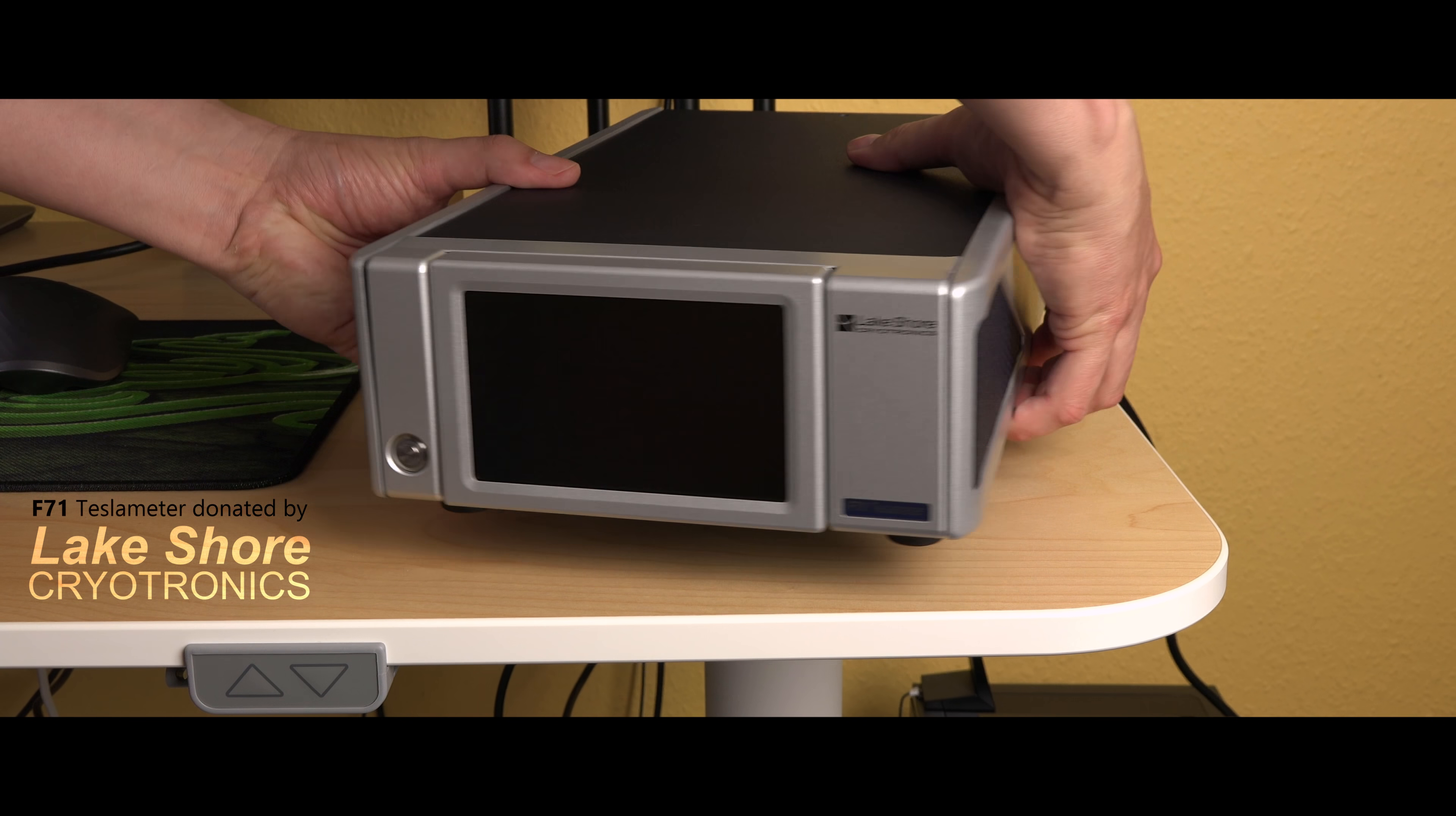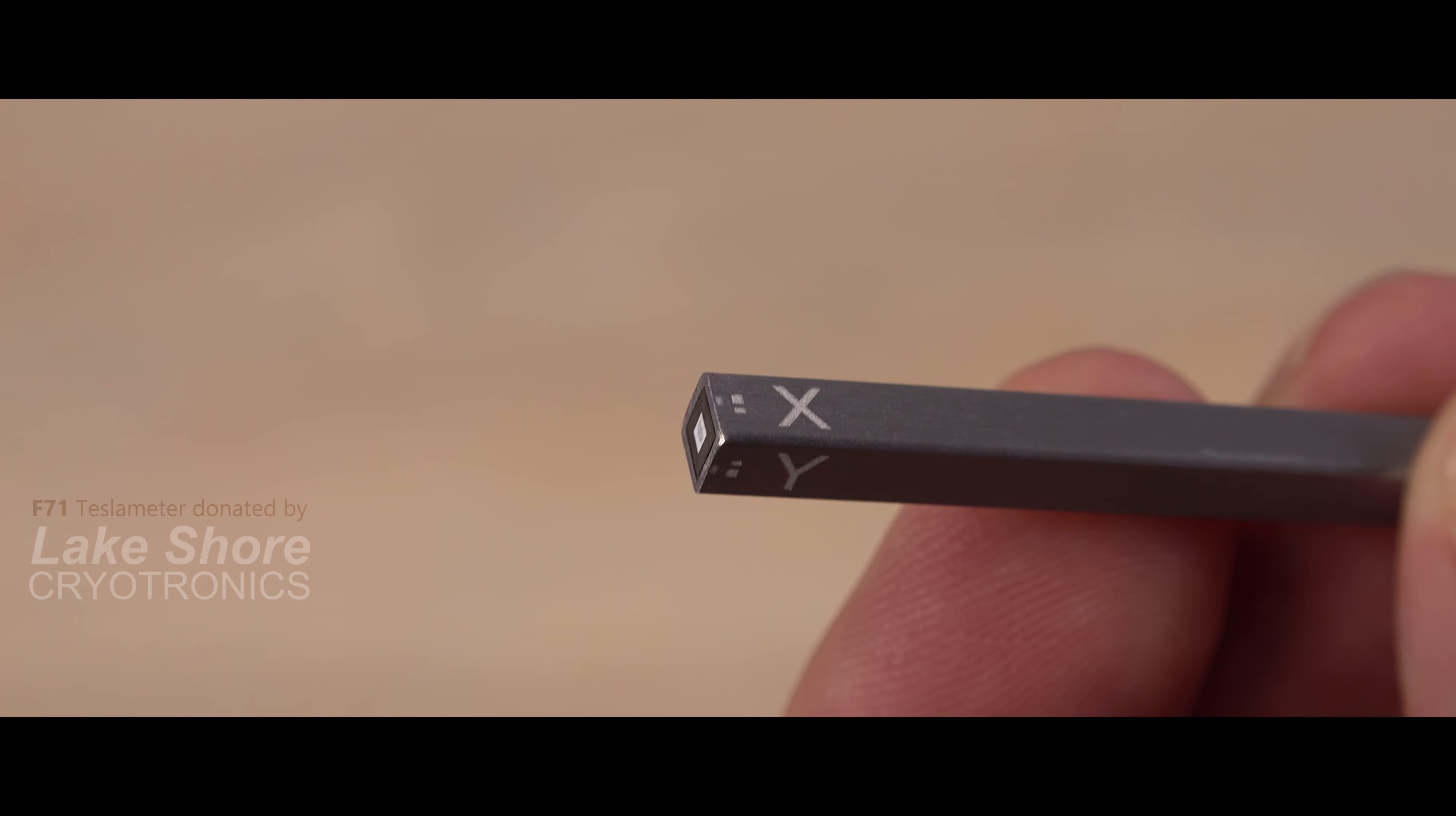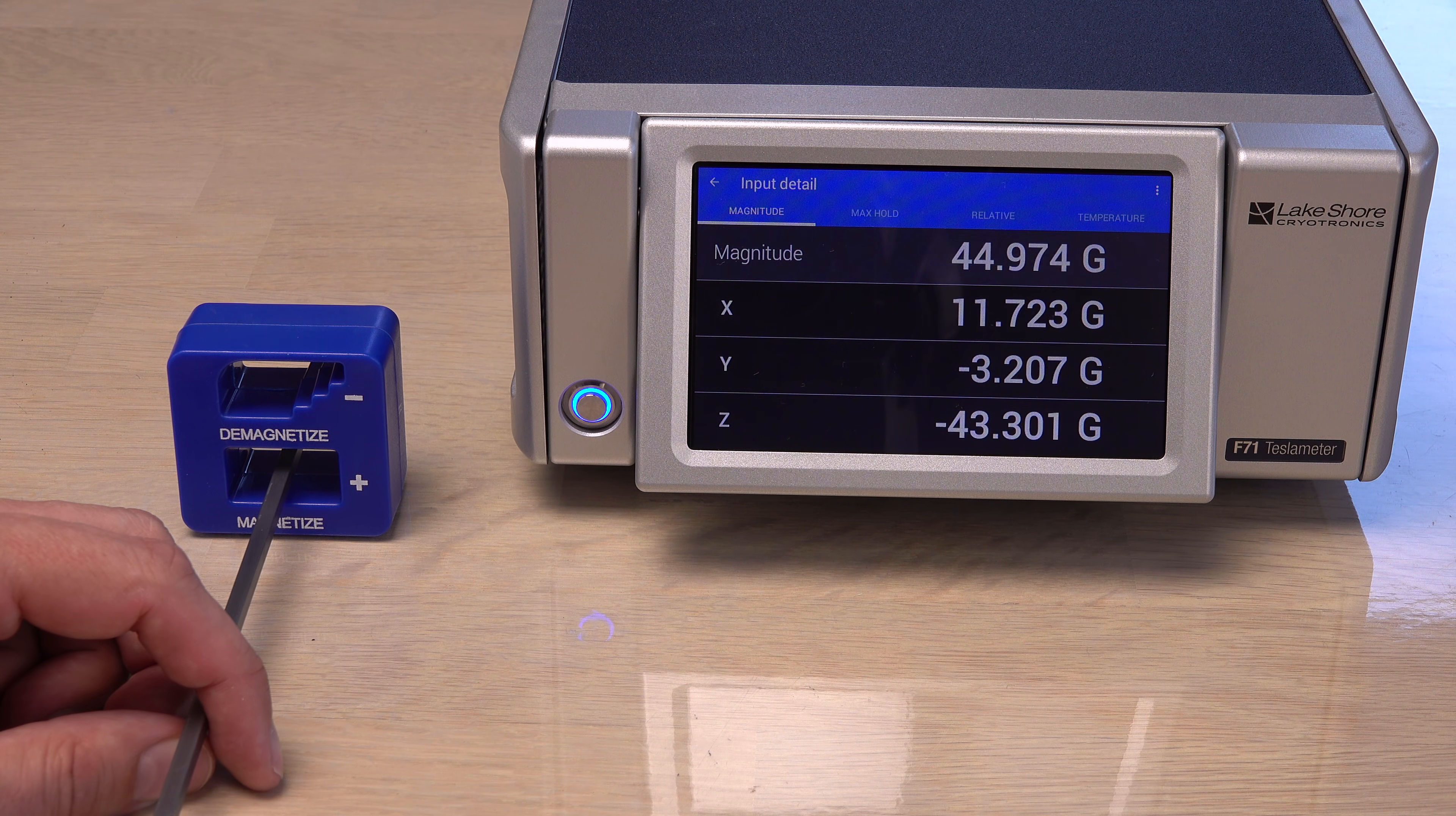Time to bring out the big leak instrument. A teslameter measuring the magnetic field in 3D. At first I just probed away getting a lot of telling info, but it takes a trained eye to decipher all this info.